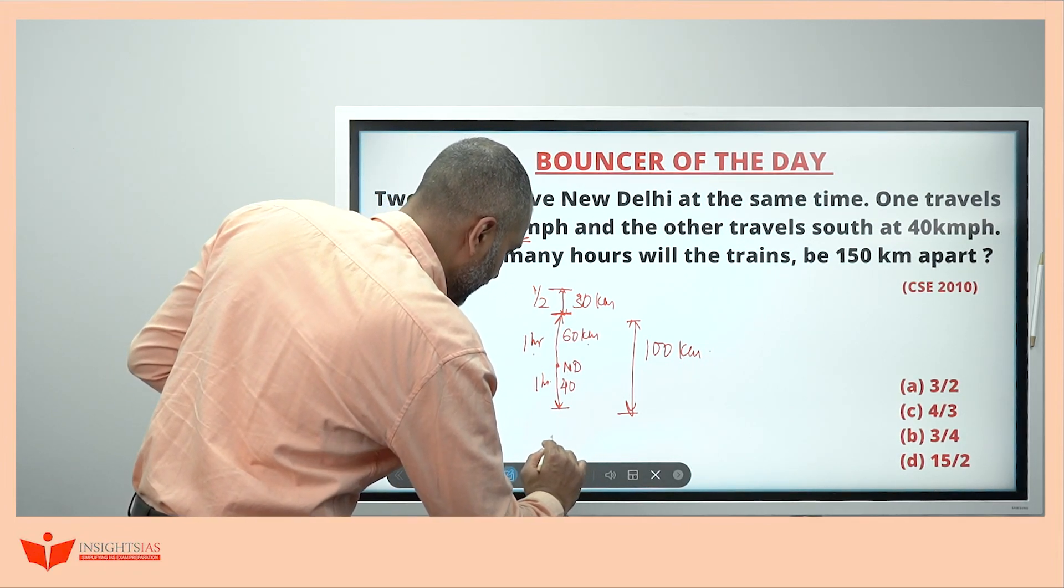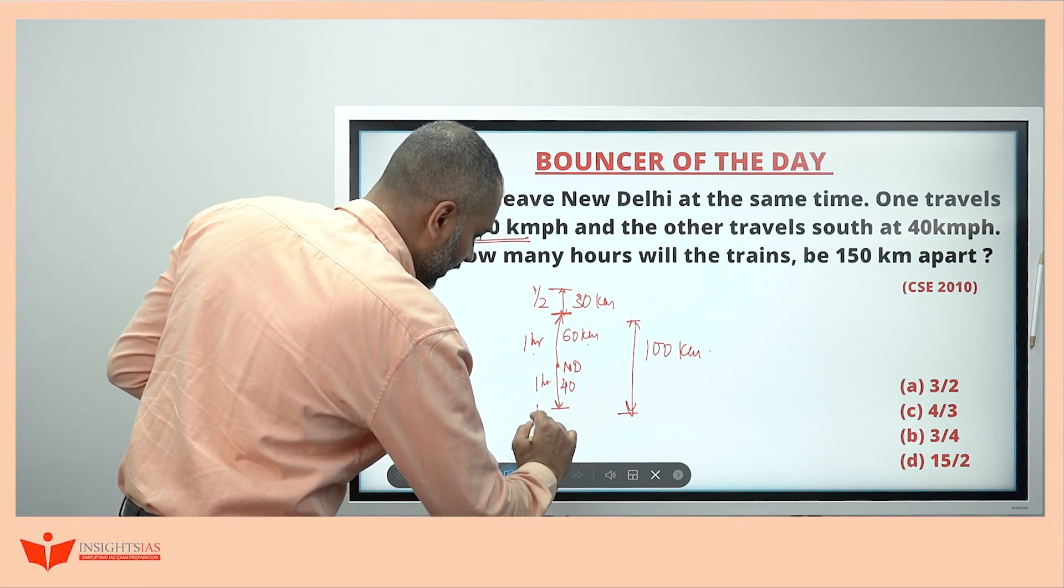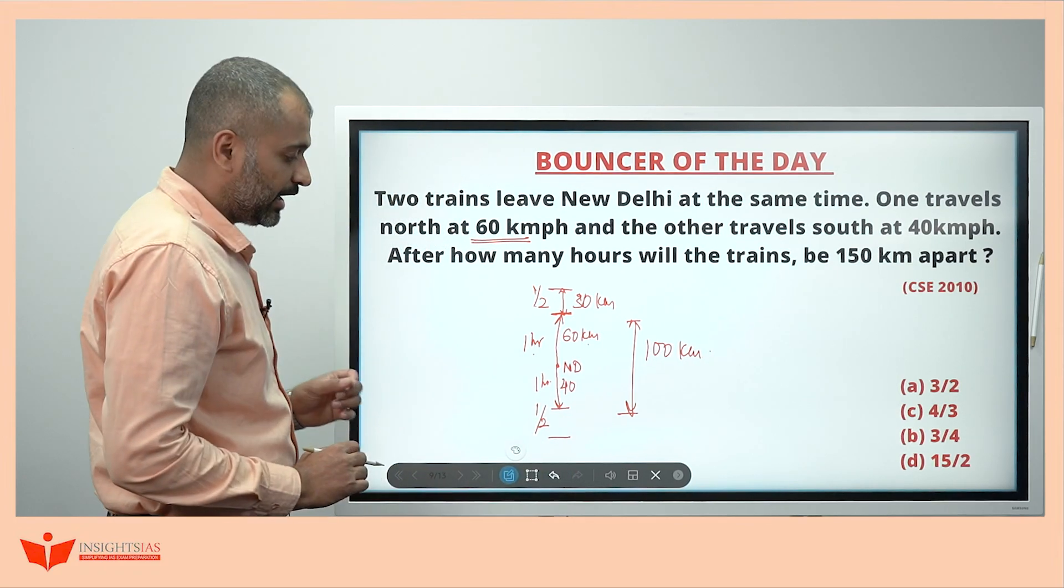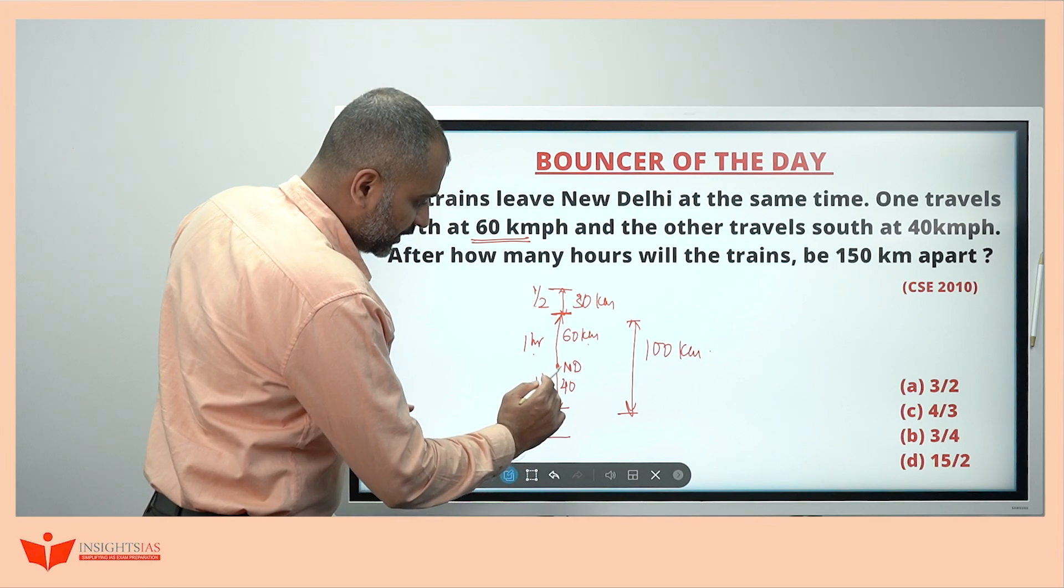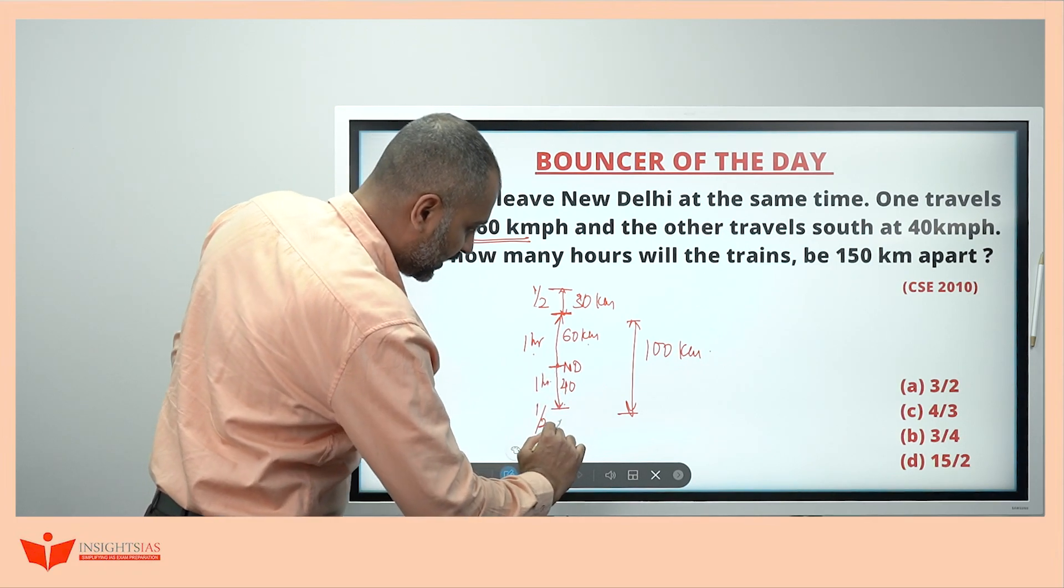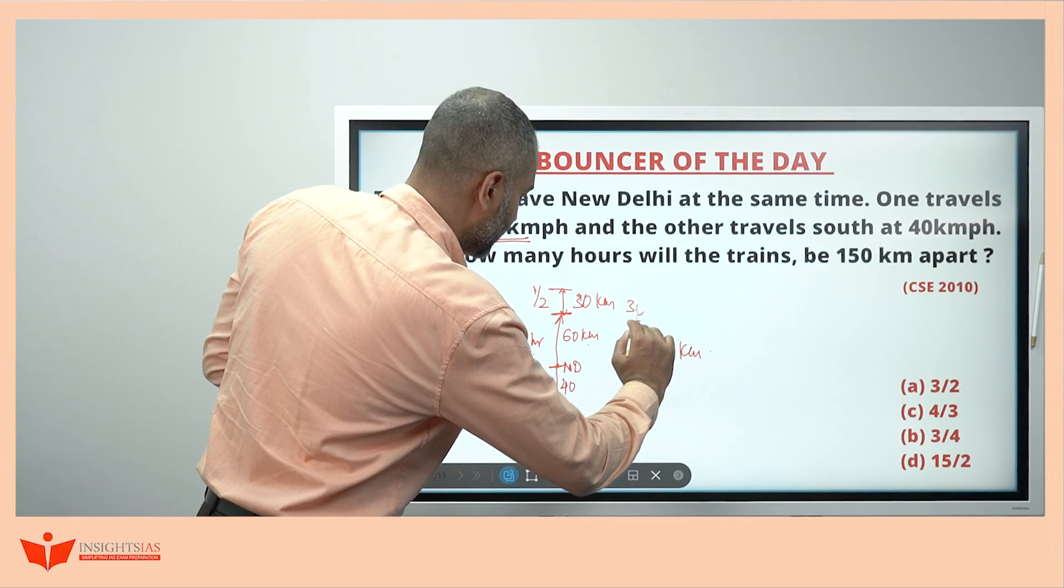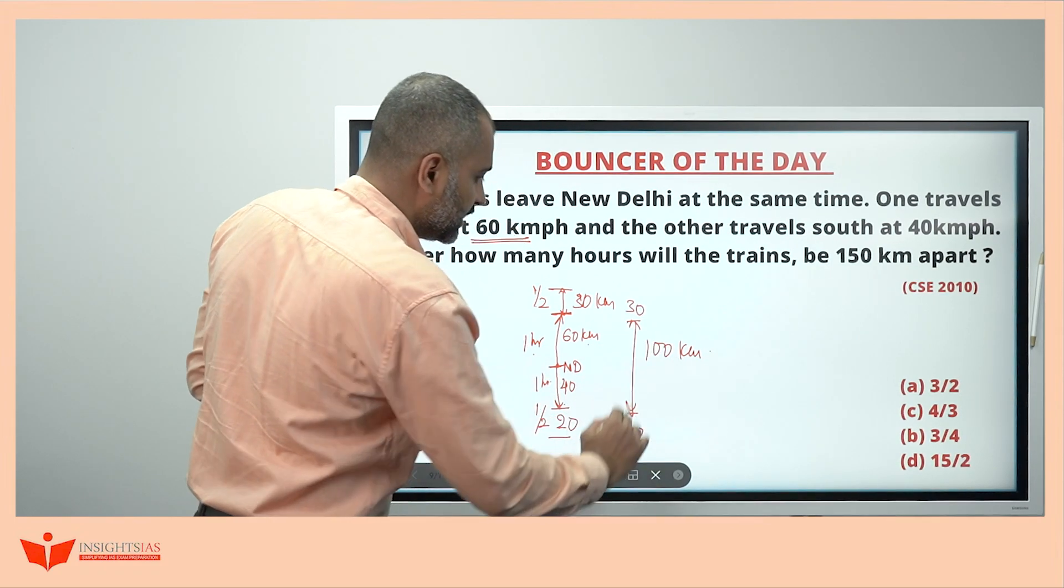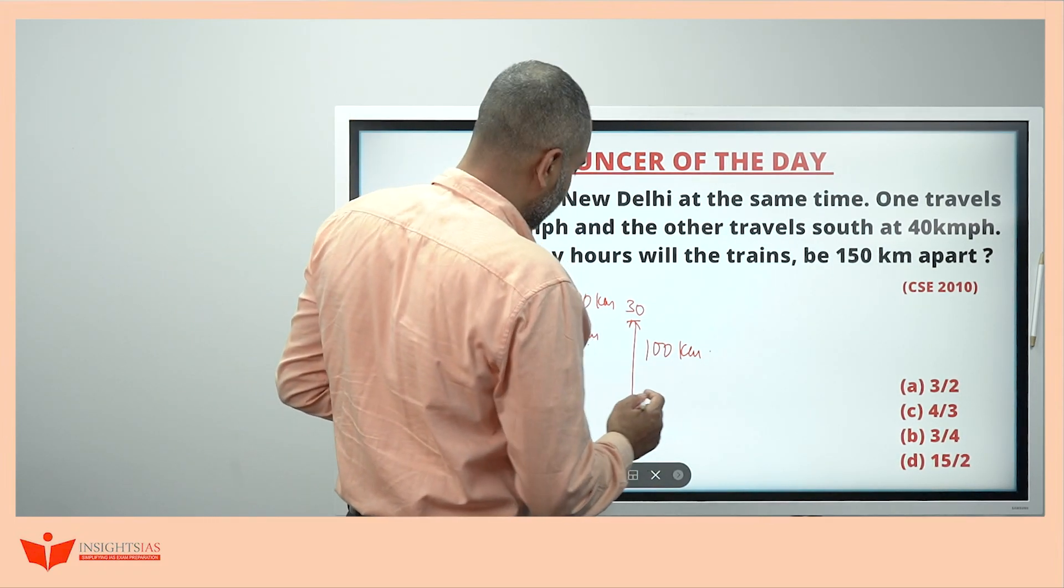Similarly, this train in next half an hour, time will be same for everyone. Okay. Time will be same for everyone here. 40 kilometers in 1 hour, in half an hour, 20. So, this is 30 here. This is 20. So, totally this becomes 150 kilometers.